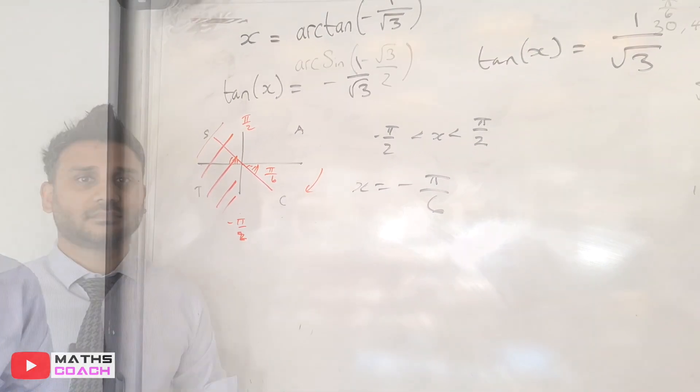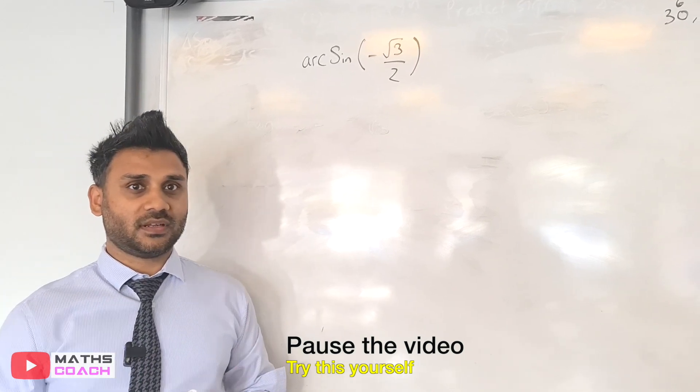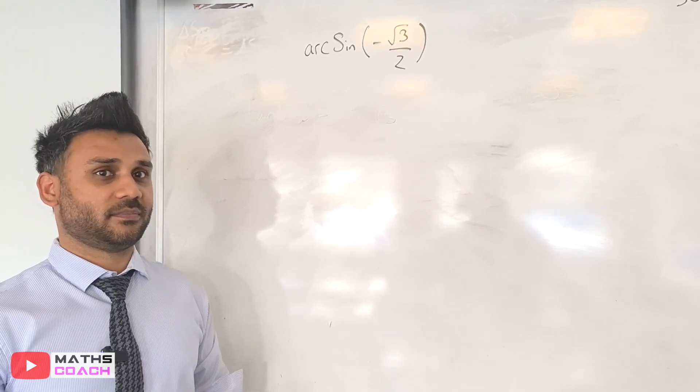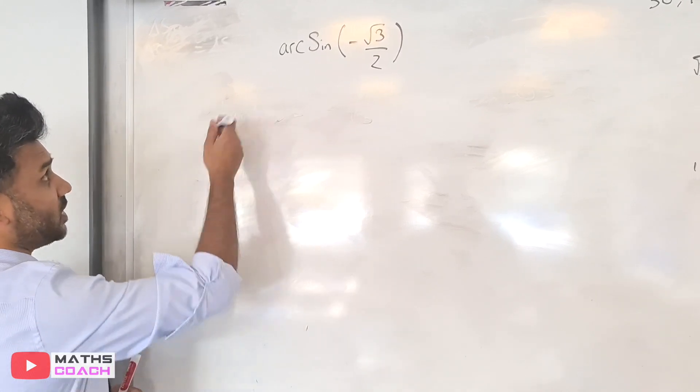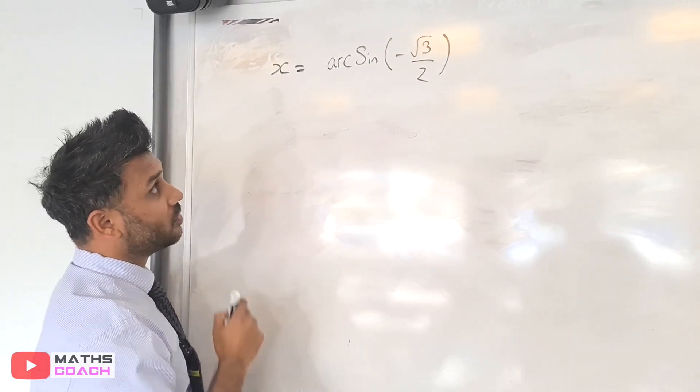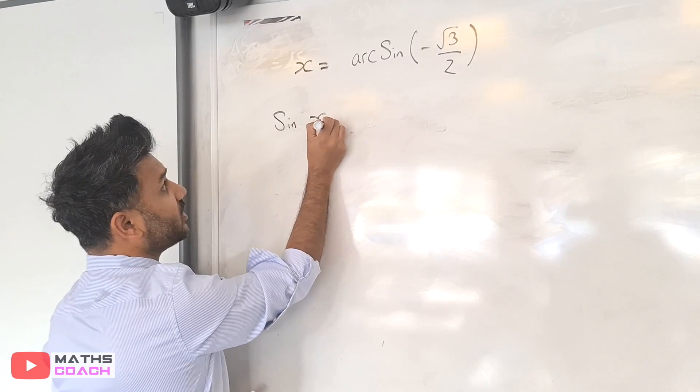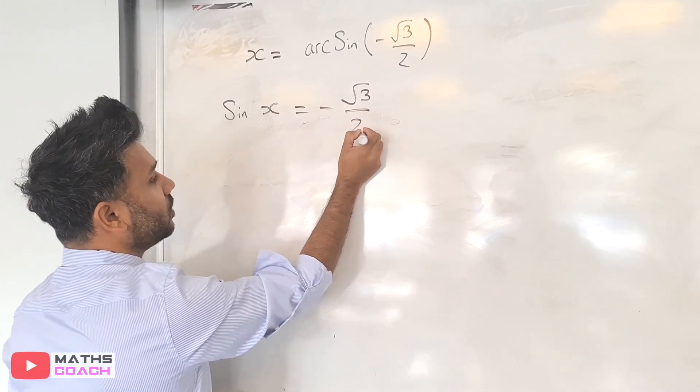Okay, so now that you've seen one of those questions done, I'll give you a couple of minutes to answer this question. Okay, so now that you've had a go at this question here, let me go through this. So we can start by saying let x be equal to the arcsin of -√3/2, in which case the sine of x would be -√3/2.